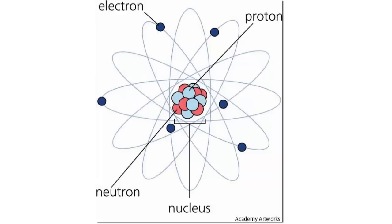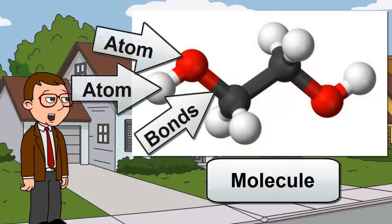Each atom has different amounts of protons and electrons. If two or more atoms are joined together by chemical bonds, it is called a molecule.